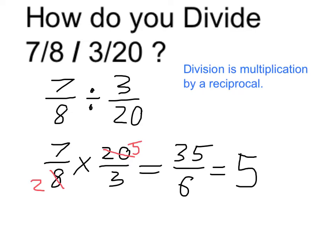But then I have 5 pieces left over between the 30 and the 35 out of 6 total. So it's 5 and 5 6ths.